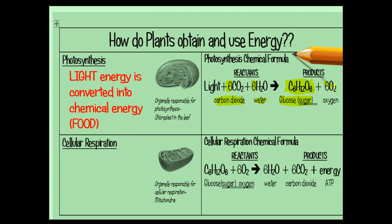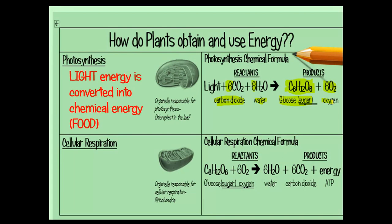Photosynthesis also produces oxygen, which is why we know that plants give us oxygen. So that's photosynthesis — it happens in the chloroplasts in the leaves of all plants. Cellular respiration also happens in plants, but it also happens in our bodies.